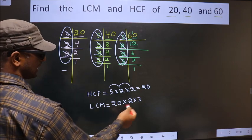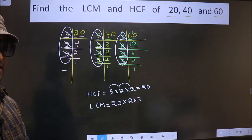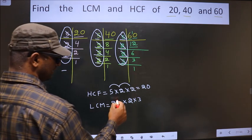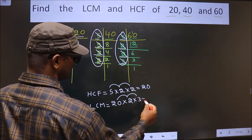Therefore, you multiply these numbers. Whatever number you get, that is your LCM. So let us multiply. That is 20 times 2 is 40, 40 times 3 is 120.